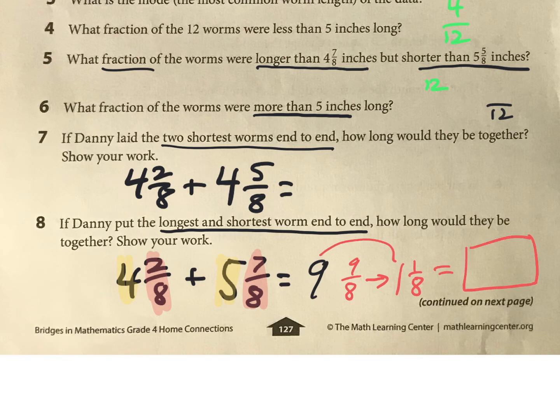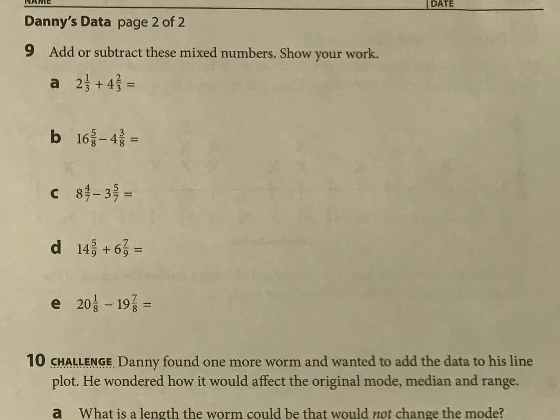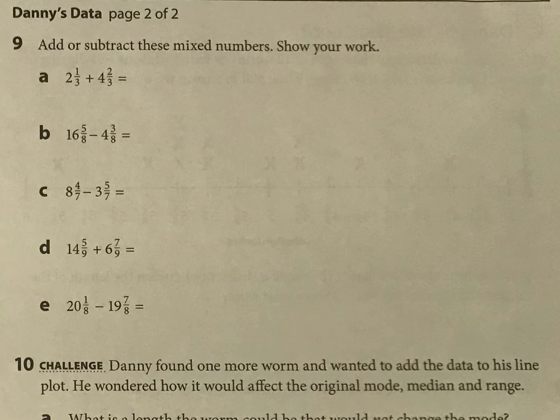Alright, let's have a look at this next page here. We're doing more of the same thing. Okay, so for some of these we can just simply add the whole numbers: 2 plus 4, and then add the fractions, 1/3 plus 2/3. Then what are you going to get here? 2 plus 4 is 6, 1/3 plus 2/3 is 3/3, right? Then you have to know that 3/3 is 1, so 6 plus 1 is basically going to be 7.